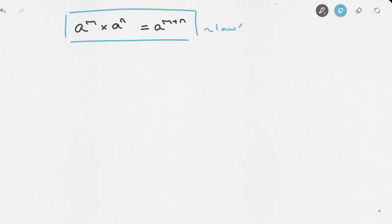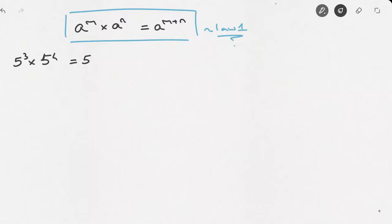Let's see how we can use this. If we're asked to simplify 5 to the power of 3 times 5 to the power of 4, using the law we've just seen we can write that this equals 5 to the power of 3 plus 4, which equals 5 to the power of 7.